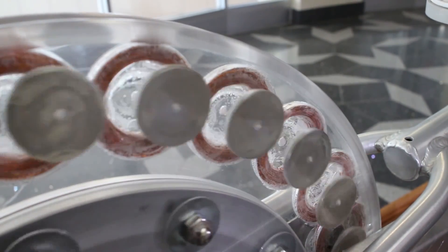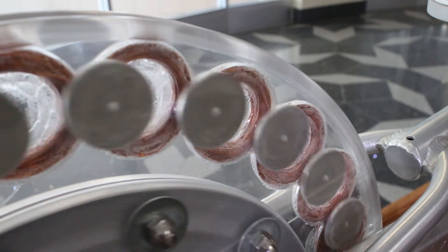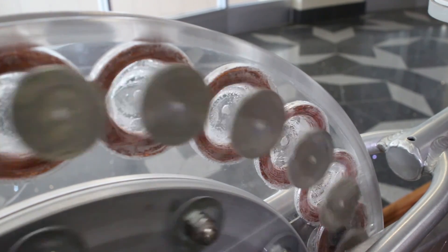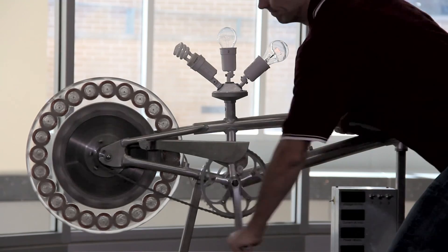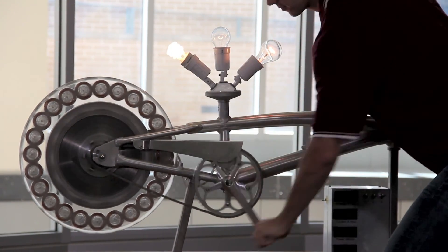In all of these cases, it was the bike generator that powered the light bulbs. As the crank spins the magnets over the copper wires, the changing magnetic flux generates current. This is called electromagnetic induction.